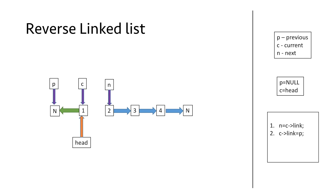Now that we have successfully reversed the first node, we increment our previous pointer to the first node by writing p equal to c, so p is now pointing to 1. The next step is to increment the current pointer to node 2 by equating c equal to n, so the current pointer now points to node 2.